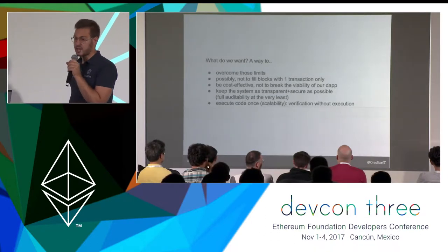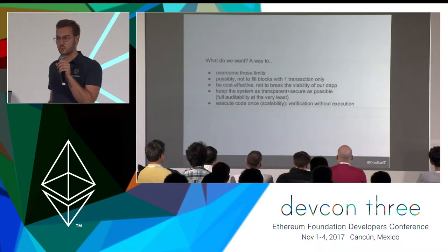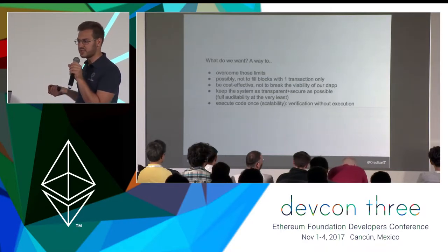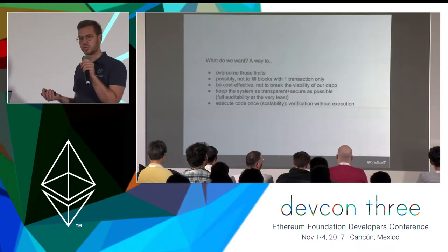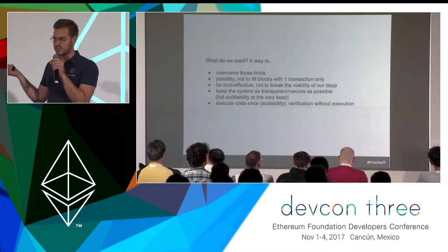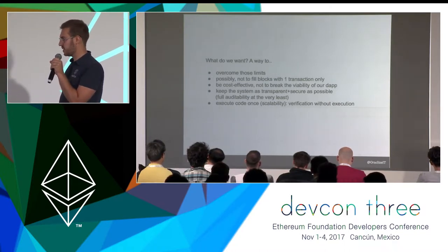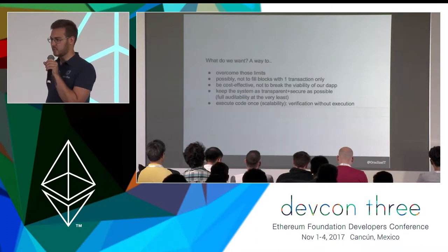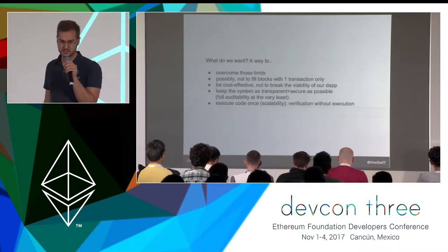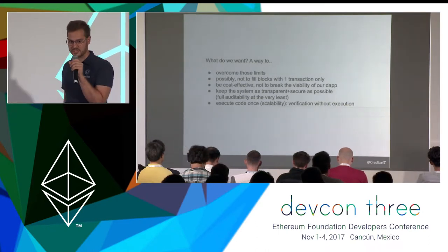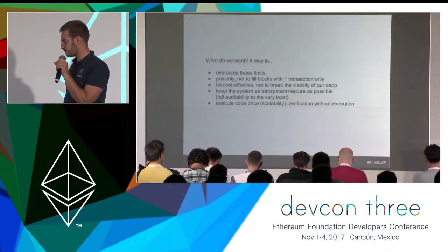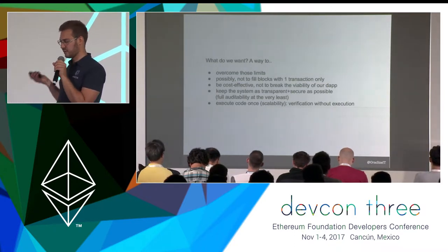In the design I will explain, execution is done just once, so the code we write doesn't need any special property or even to be deterministic. We just need to prove that the computation was done in a provably fully locked-down environment that nobody could control. We want to overcome these limitations without bringing too much complexity, without using too much gas — keeping it cost-effective so we don't break the viability of most dApps with transactions costing sixty dollars. We want to maintain strong security guarantees — essentially verification without execution.